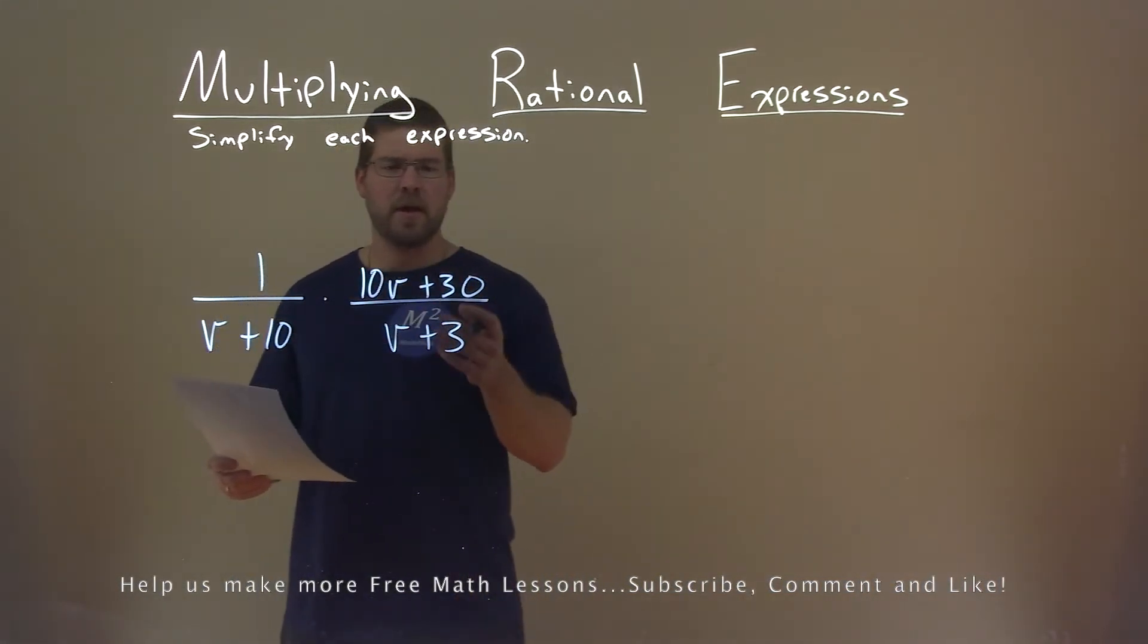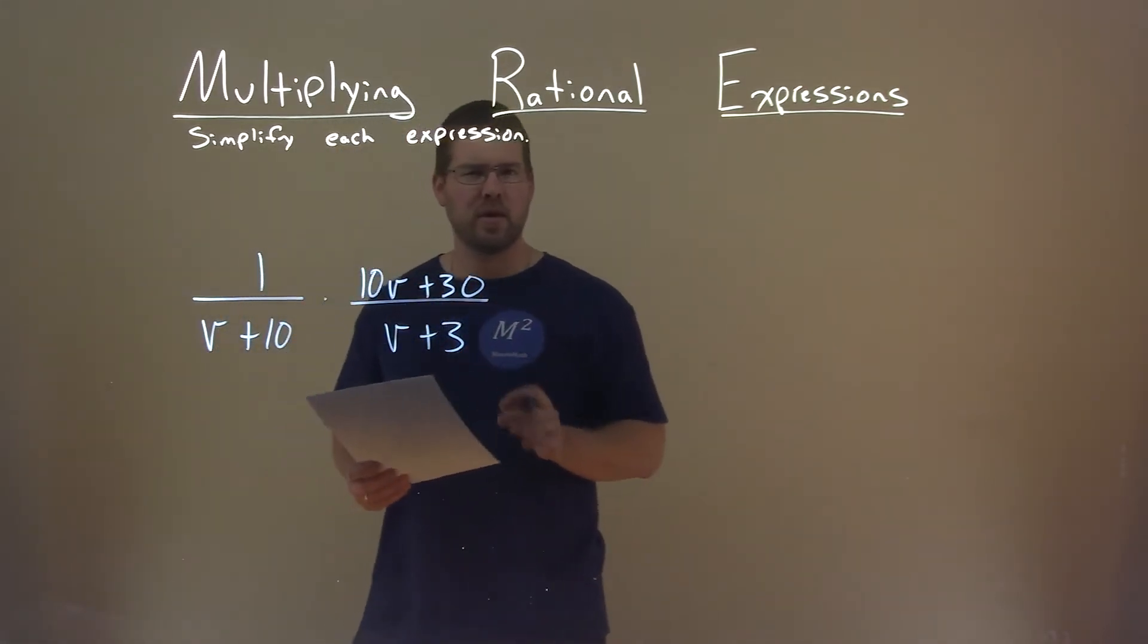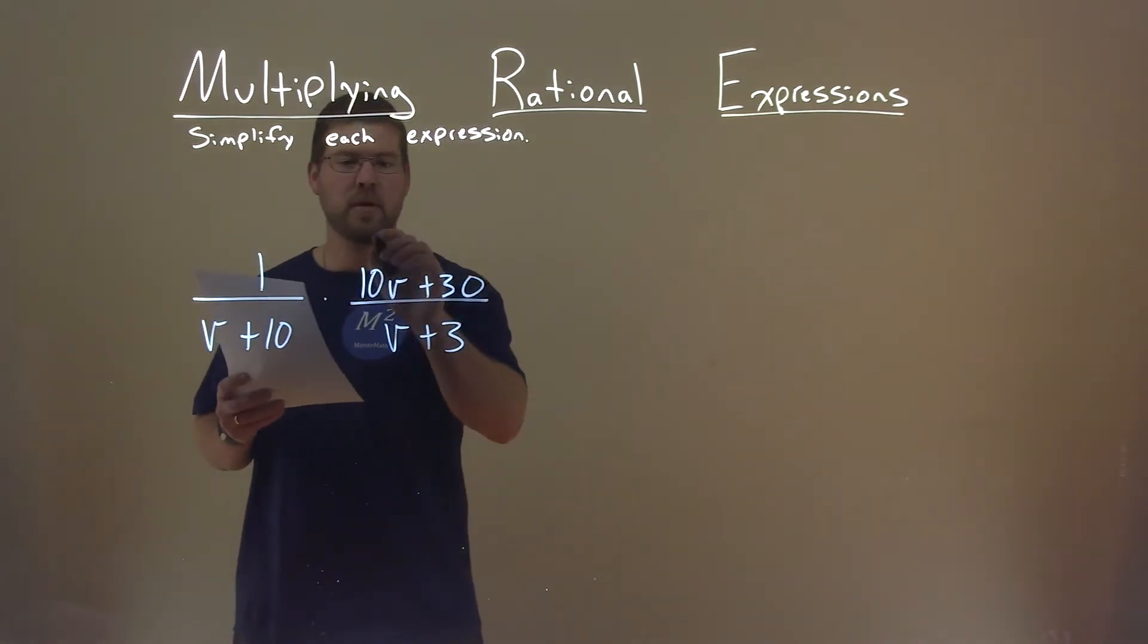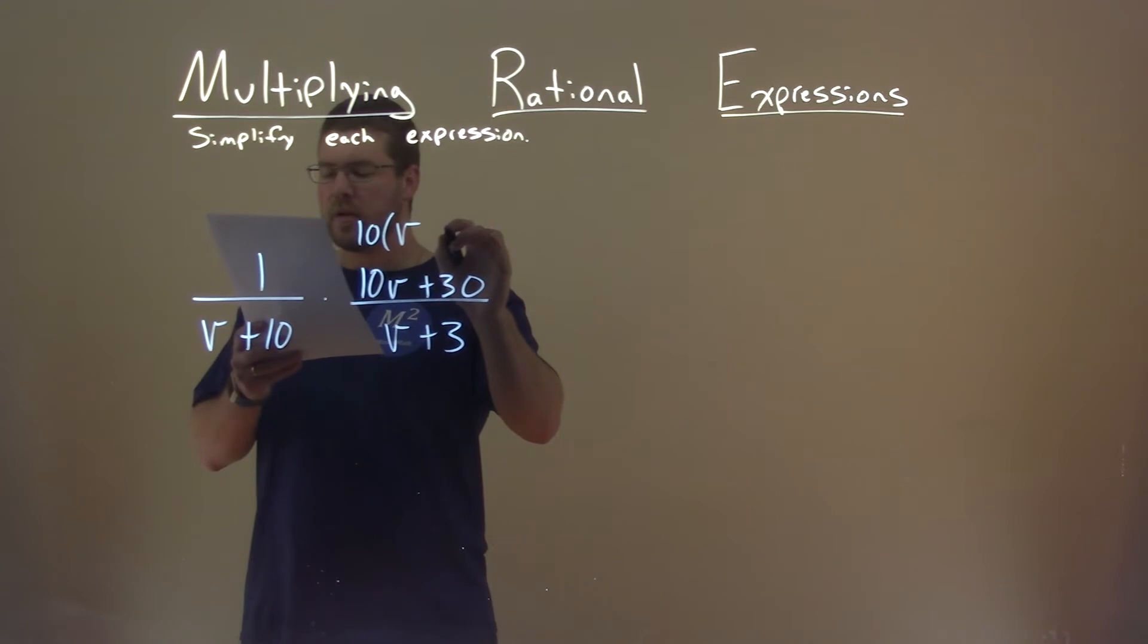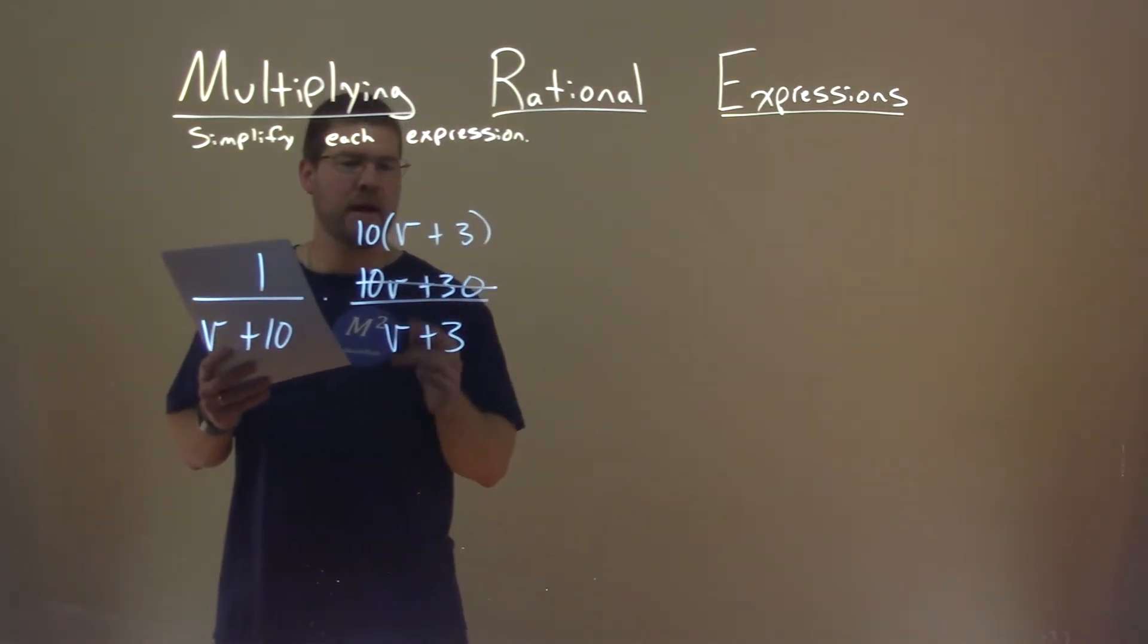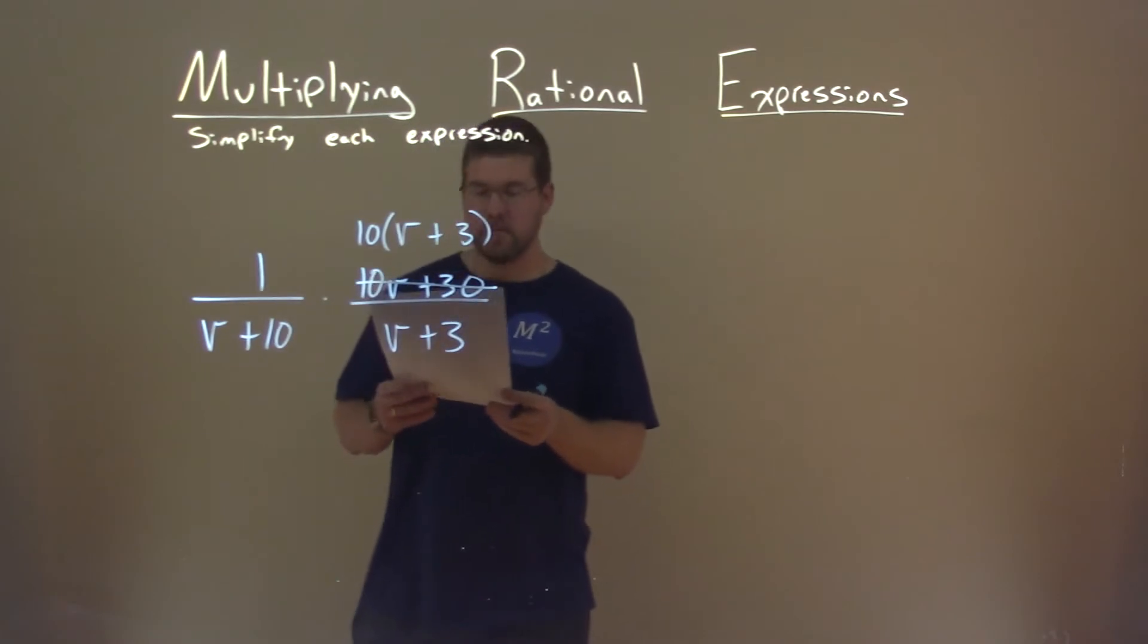So I'm trying to simplify where I can. This 10v plus 30 looks like I can pull out a 10 from it. So if I pull out a 10, I'm left with v plus 3. I'm going to cross that out and replace it with a 10 times v plus 3.